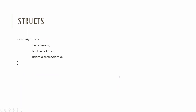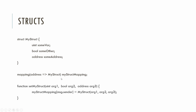Another version of using structs is with a mapping, where you can save additional information for an address. The key value of the mapping is the address, and the value type is the struct. You can set your struct with some function arguments, using the message sender address as the key. The message sender address is a global variable that contains the address of the person who initialized the transaction.